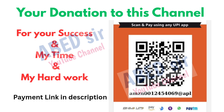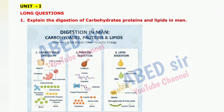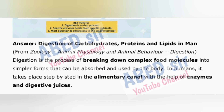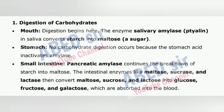Next, Unit 1 Long Questions. First important long question: Explain the digestion of carbohydrates, proteins, and lipids in man. Digestion is the process of breaking down complex food molecules into simpler forms that can be absorbed and used by the body. In humans, it takes place step by step in the alimentary canal with the help of enzymes and digestive juices. 1. Digestion of Carbohydrates — Mouth: digestion begins here. The enzyme salivary amylase (ptyalin) in saliva converts starch into maltose, a sugar.